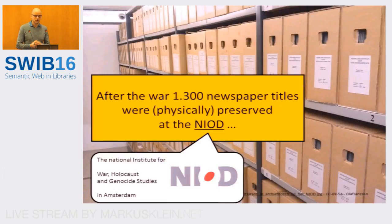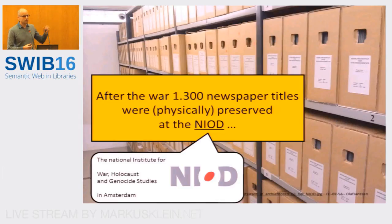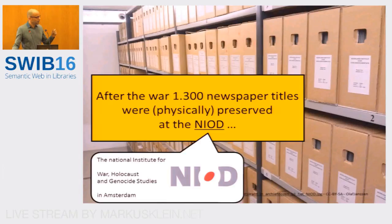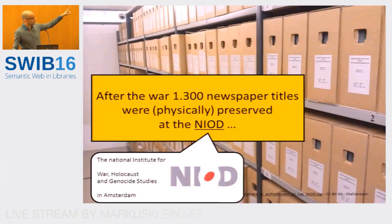Right after the war, the Dutch Institute for War and Holocaust Studies in Amsterdam — the NIOD — started collecting those newspapers for posterity. Over the years they managed to collect some 1,300 individual titles — I'm talking about titles, not issues. In total there are some 200,000 pages of illegal newspapers, and it's about the archive that you see at the back of the slide — that's the entire archive.